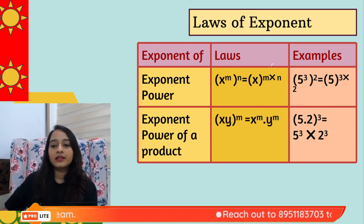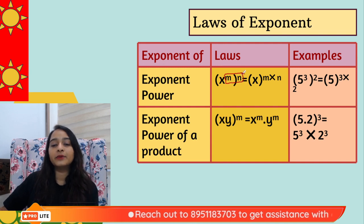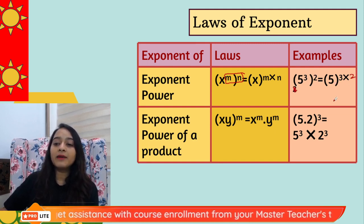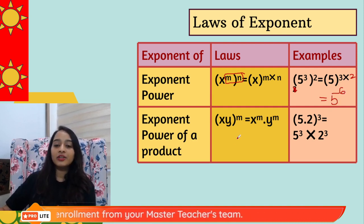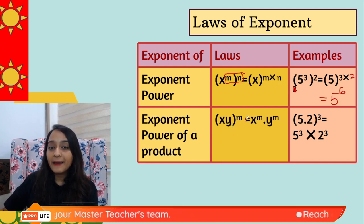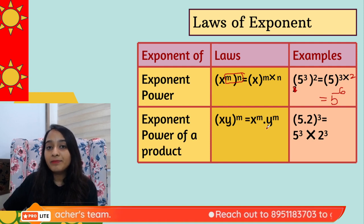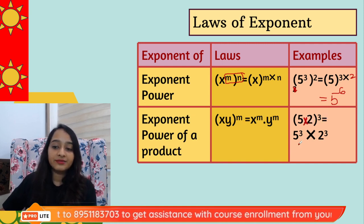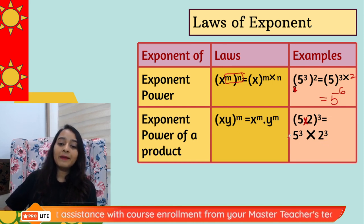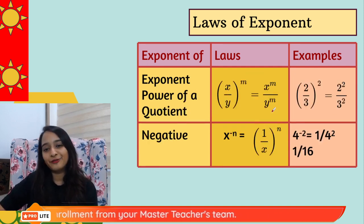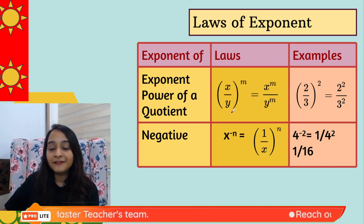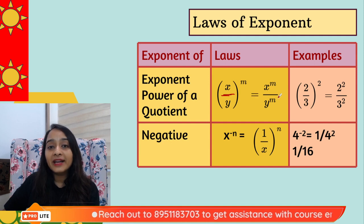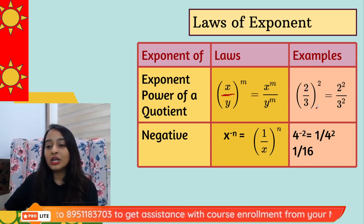Power of a power law: (x^m)^n = x^(m×n). For example, (5³)² = 5⁶. Product of bases law: (x × y)^m = x^m × y^m, so (5 × 2)³ = 5³ × 2³ — here the exponent is the same but the bases are different. Quotient of bases law: (x/y)^m = x^m / y^m, so (2/3)² = 2²/3².